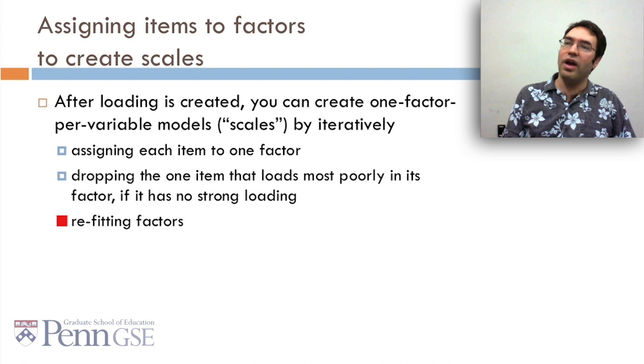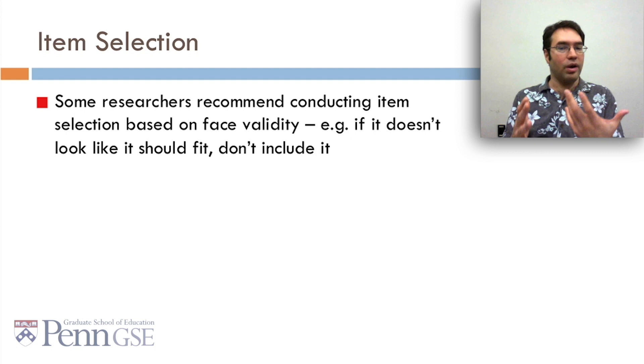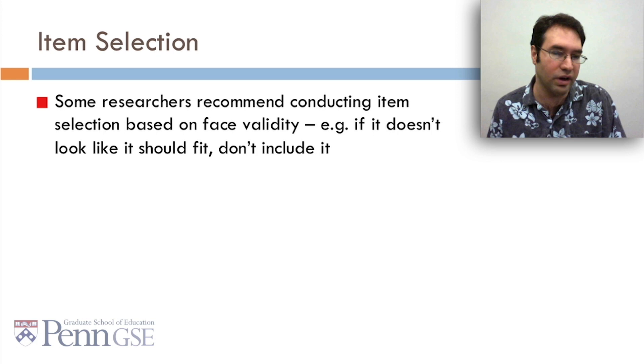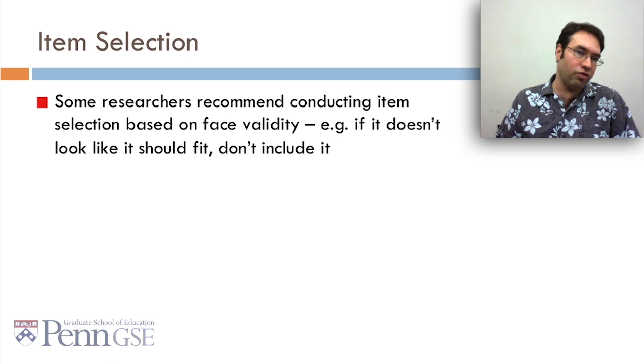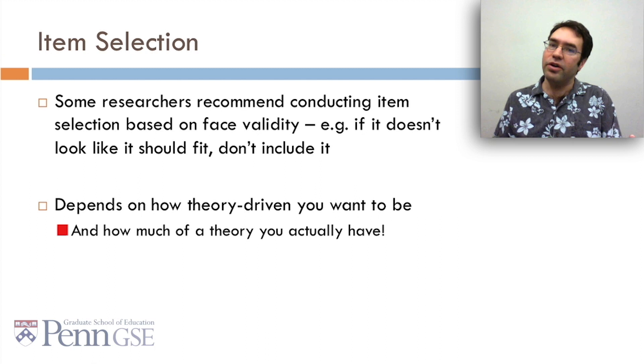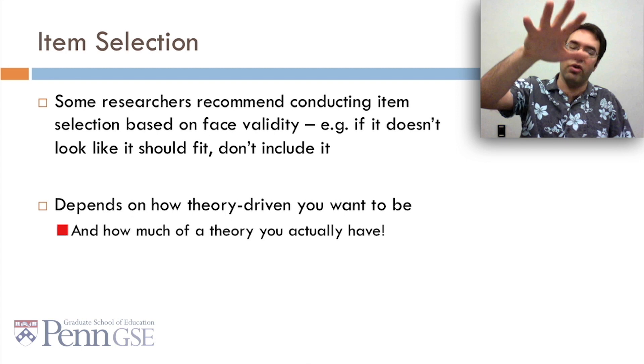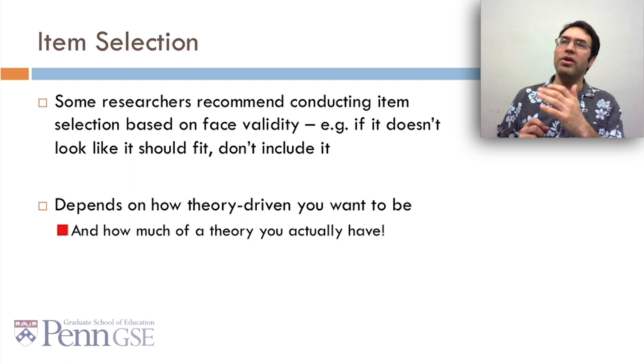So item selection. Some researchers recommend conducting item selection not just based on the fit to a factor, but also based on face validity. In other words, if it doesn't look like it should fit, don't include it. So, for example, if you're creating a questionnaire for whether students have performance goals, and one of your items and it loads strongly on performance goals is, I like to eat cake, maybe you should get rid of it. This depends on how theory-driven you want to be, and how much of a theory you actually have. You know, if you really have a strong theory, if you're working on something like performance goals, which Carol Dweck, and Andrew Elliott, and Midgley, and all these other people have been working on for three decades, maybe you want to be very theory-driven. But if you've got some completely new construct, maybe you don't want to be so theory-driven. What you don't want to do is feel pressured into having to have a theory, and then throw things out because they don't conform with your theory that really you just kind of made up on the spot.